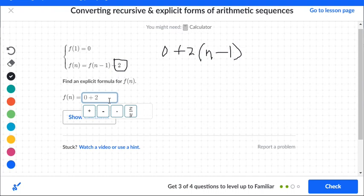So I'm going to keep it as the first term, which is zero. The rule is positive two. And then I'm going to go parentheses, n minus one.